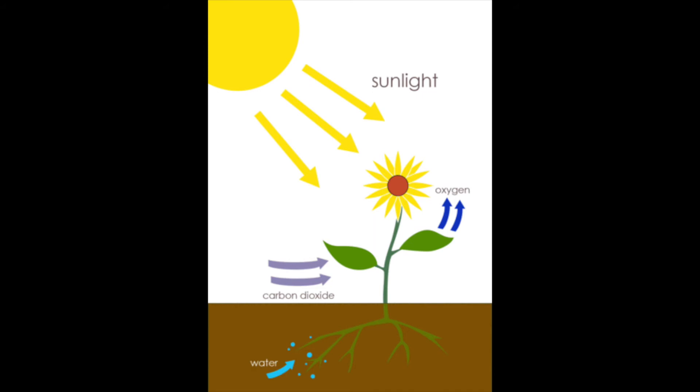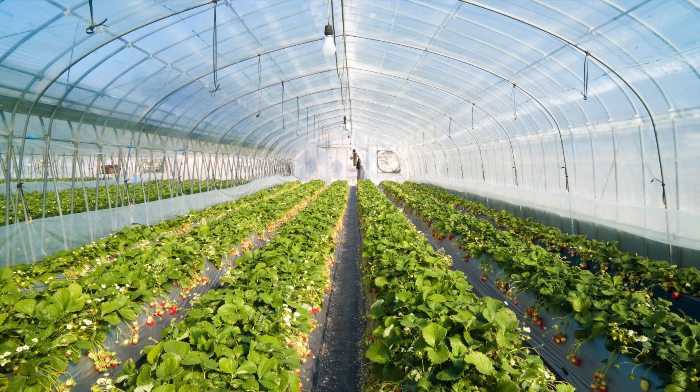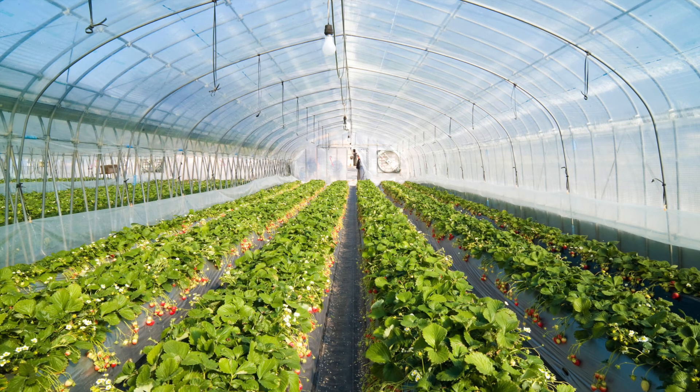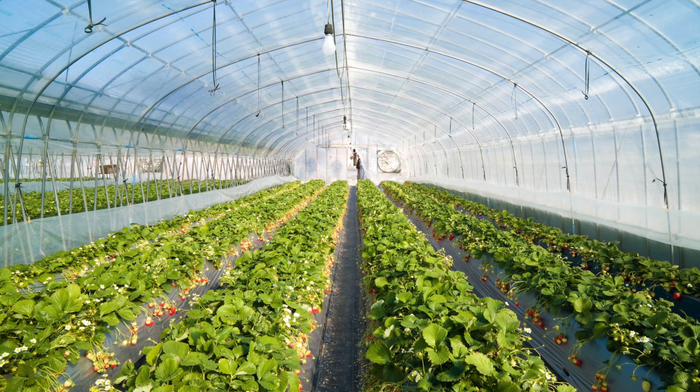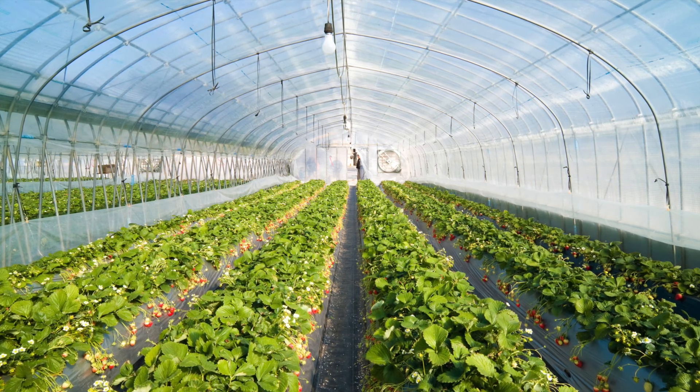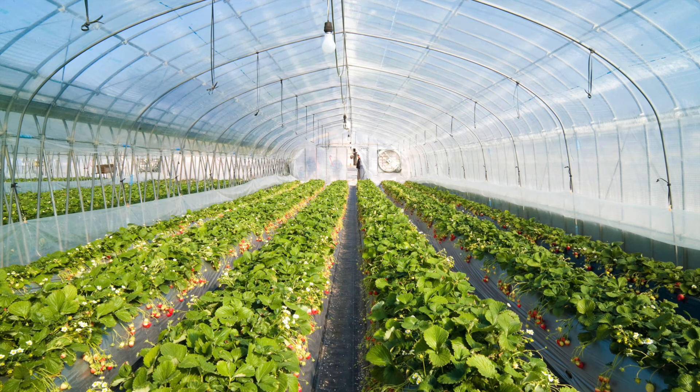You want high temperatures because photosynthesis can happen better. But however, if you go 40 degrees or over, these enzymes are denatured, so photosynthesis will decrease until there is no photosynthesis at all.